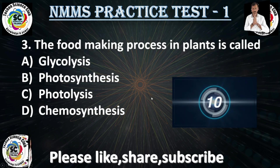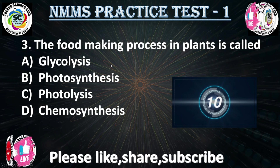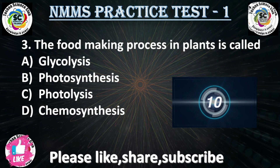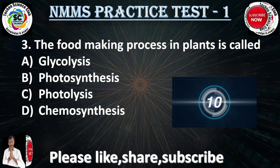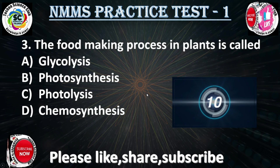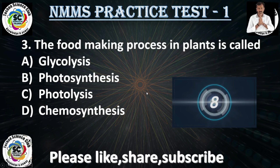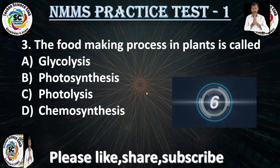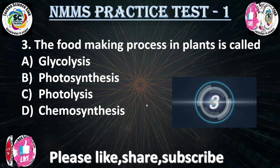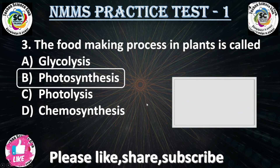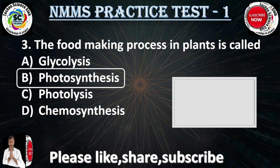Question No. 3: the food making process in the plant is called — Option A: glycolysis, Option B: photosynthesis, Option C: photolysis, Option D: photosynthesis. Your time starts now. The answer is photosynthesis. Plants make their own food by the process of photosynthesis.